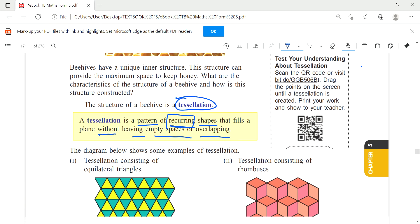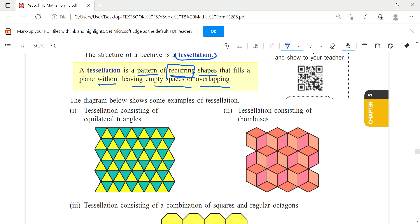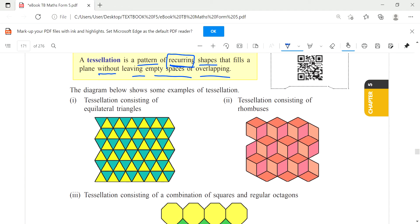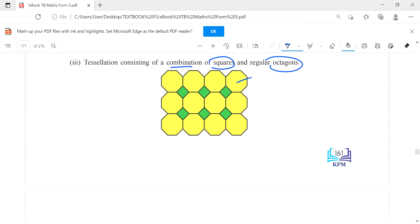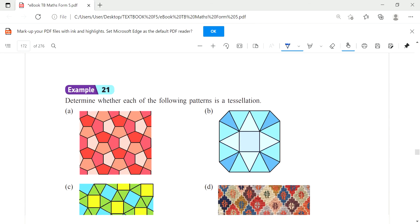A few patterns here you can see. These are tessellations consisting of triangles, and then this one is rhombus. And then here, combination of square and regular octagons.